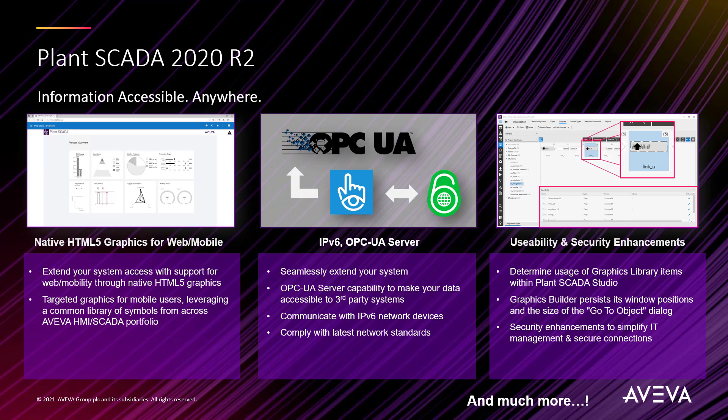We provide enhanced connectivity with support for both IPv6 network addressing and native OPC UA server capabilities. The OPC UA server provides native access to Plant Skater data from third-party systems, offering data access functionality for now, expanded to include history and alarms and conditions in future releases.